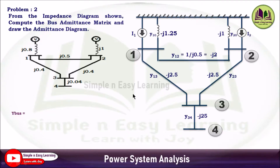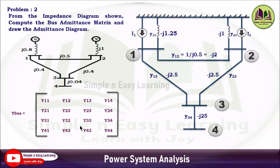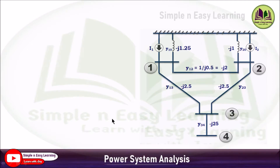This is a 4-bus system, so Y-bus is a 4×4 matrix. It consists of elements Y11, Y12, Y13, Y14, Y21, Y22, Y23, Y24, Y31, Y32, Y33, Y34, Y41, Y42, Y43, and Y44. These 16 parameters need to be determined to form the Y-bus matrix. Using the admittance diagram, you can directly find these parameters easily.